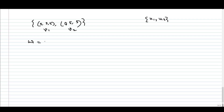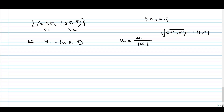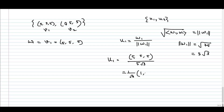For the first vector, w1 is the same as v1, so it is (5, 5, 5). So u1 is w1 divided by the norm of w1. The norm of w1 is the square root of the inner product of w1 with itself. Using the dot product, the norm of w1 is the square root of 75, which is 5√3, since 25 times 3 equals 75. So u1 is (5, 5, 5) divided by 5√3, giving us (1/√3)(1, 1, 1).